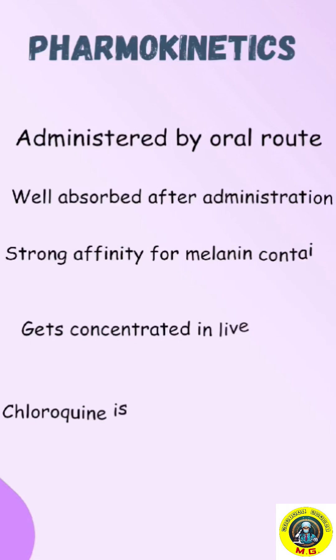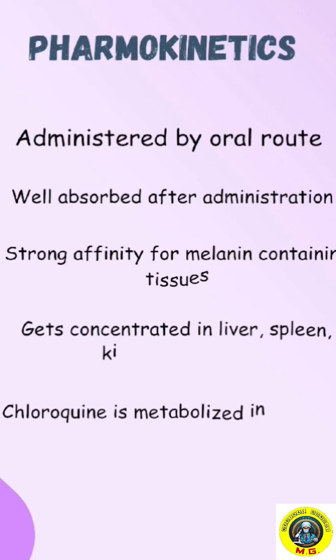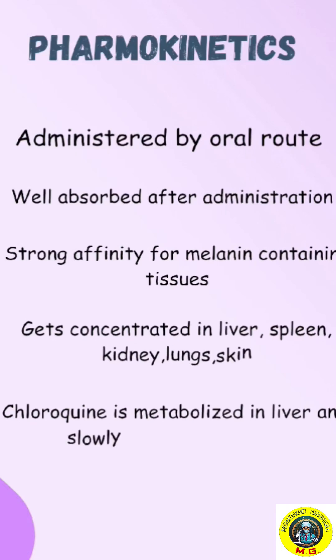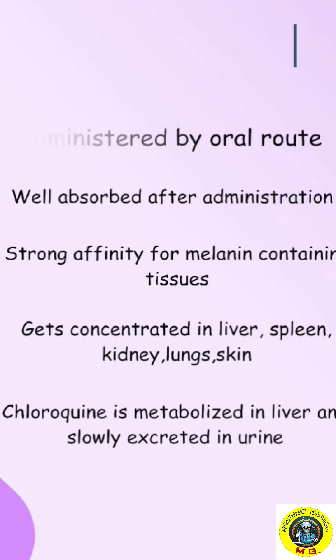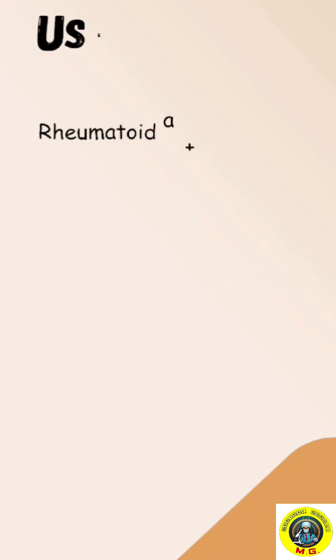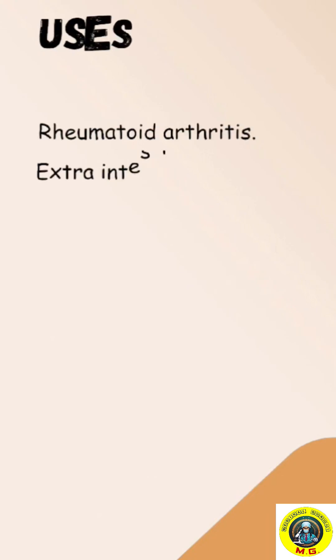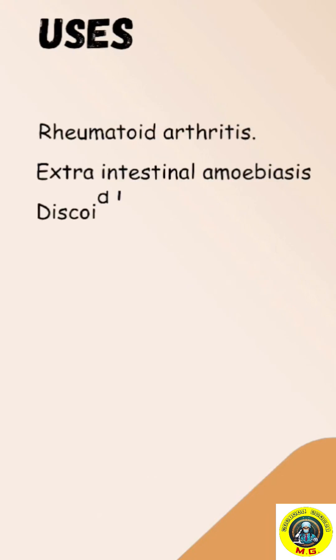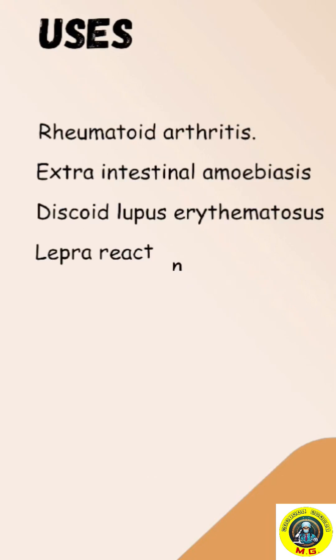Pharmacokinetics of chloroquine: It is administered by the oral route and is well absorbed after administration. It has a strong affinity for melanin-containing tissues and gets concentrated in the liver, kidney, lungs, and skin. It is metabolized in the liver and slowly excreted.